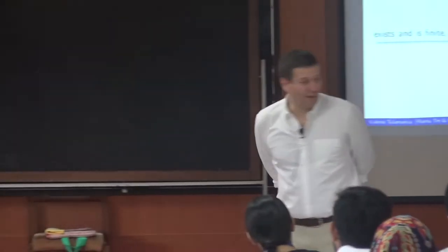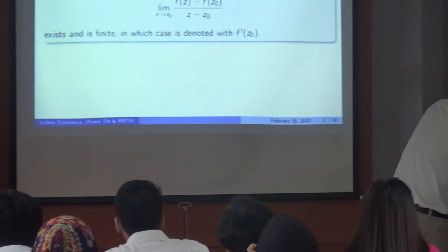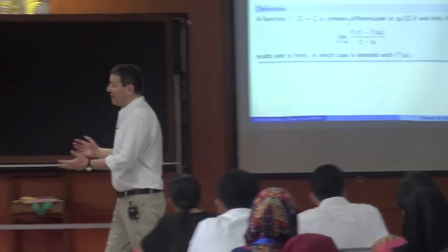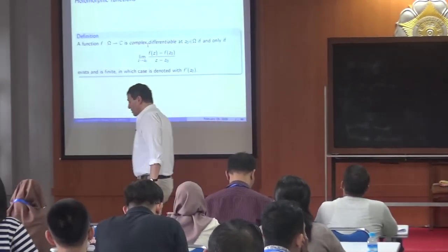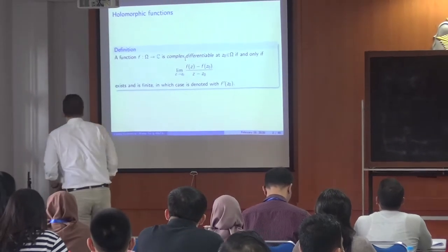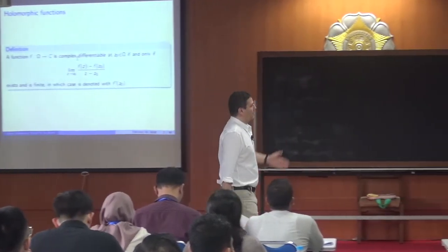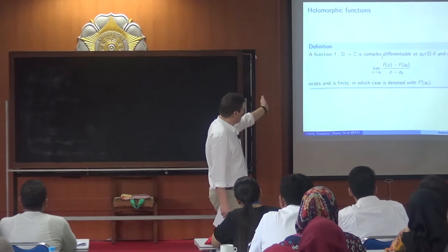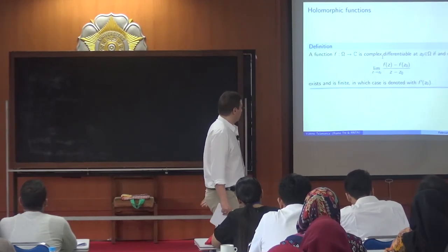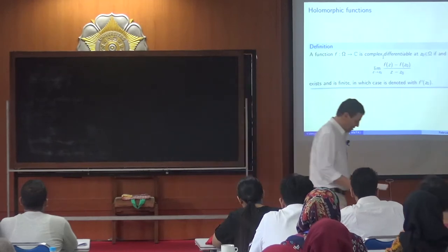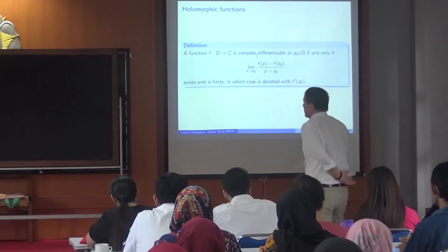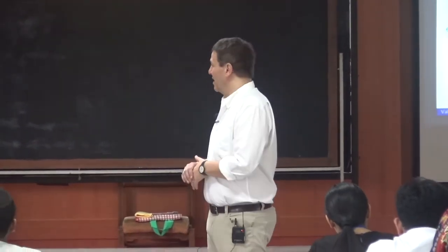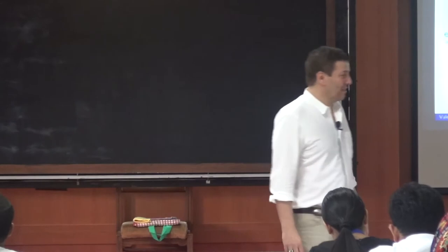We start with the definition. A function is complex differentiable at a point on an open set in the complex plane if and only if the limit, as z goes to z₀, of f(z) minus f(z₀) over z minus z₀ exists and is finite. In that case we denote it by f prime of z₀. This looks innocent enough — it's exactly the same definition as in the real numbers — but what comes out is a completely different story.